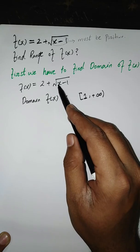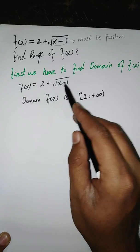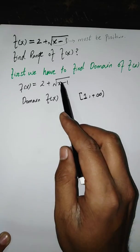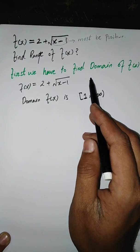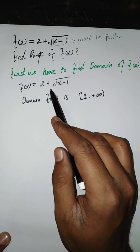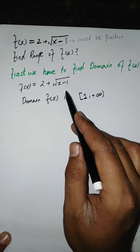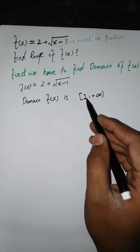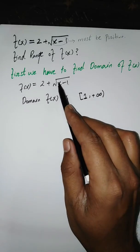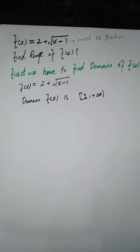Whenever we put a number less than one, for example zero, we get zero minus one under the radical, which becomes a complex number. That's why we do not include such values in the domain — because we give inputs from the set of real numbers, our outputs must also be real numbers.